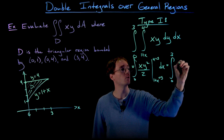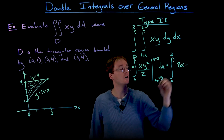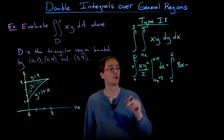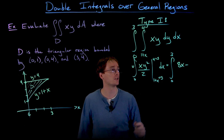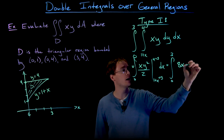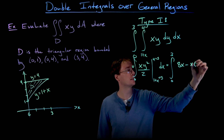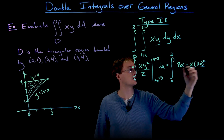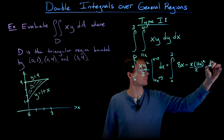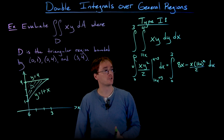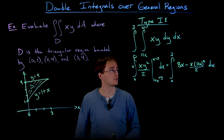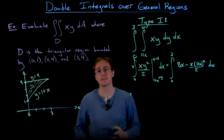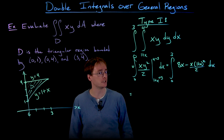So the first term is 8x. We subtract away the antiderivative evaluated at the lower limit y equals 1+x, giving us x times (1+x) squared over 2. Now we have an integral just with respect to x, but we need to expand that second term and combine like terms before integrating.